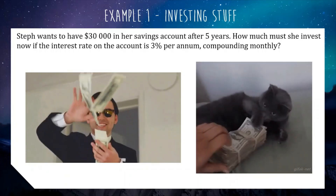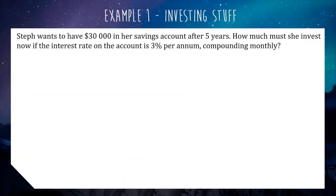The crucial part of the question is that it mentions compounding monthly. This tells you two important things. First of all, it tells you we need to be using the compound interest formula as opposed to the simple interest formula. It also tells us that we need to be doing our calculations monthly rather than yearly, because the compound period dictates how often you're recalculating, so it does affect the mathematics.